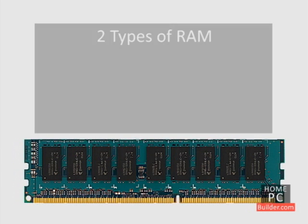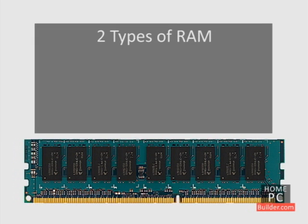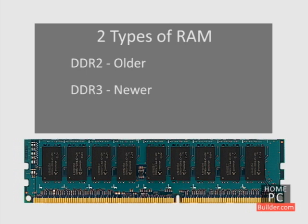There are currently two types of RAM used in computers today. The older type, which has been around for five years and is the most prevalent, is called DDR2. The newest type, which is now going mainstream, is called DDR3.